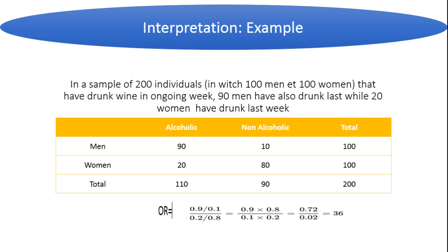Looking at the women's population, 20 women in the sample drank in the previous week among the 100 women who drank in the current week. We calculate the odds ratio and find that it is 3.6, meaning that being male is a risk factor for developing alcoholism — alcoholism is 3.6 times more frequent in the male group than in the female population. That's all for this tutorial on odds ratio.